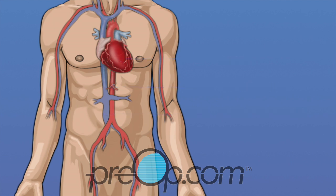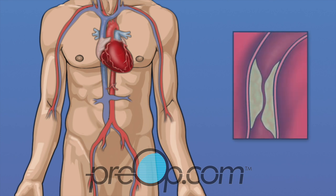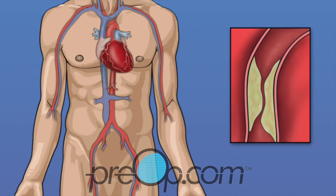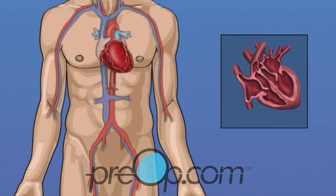During a cardiac cath, your cardiologist will test how well your heart muscle is working. The arteries that carry oxygen to the heart are examined and blocked arteries can be identified. The inside of the heart, the walls and important flaps called valves, are checked for problems.